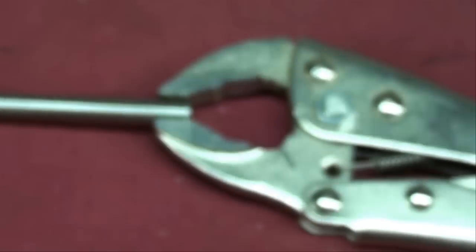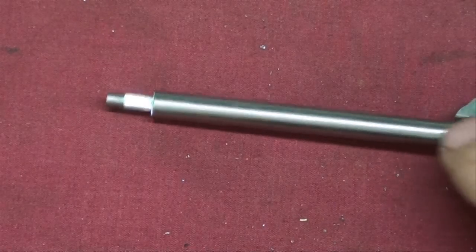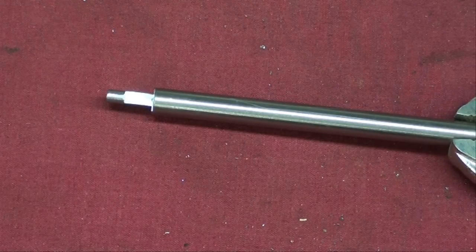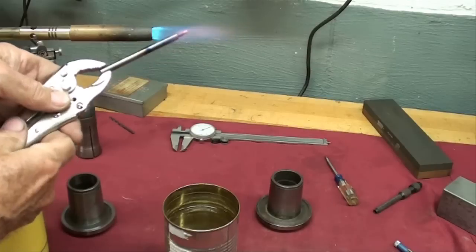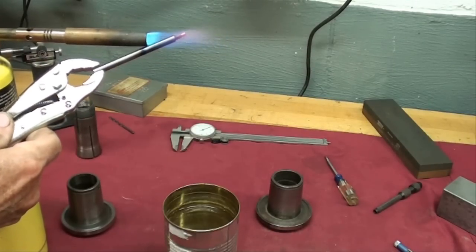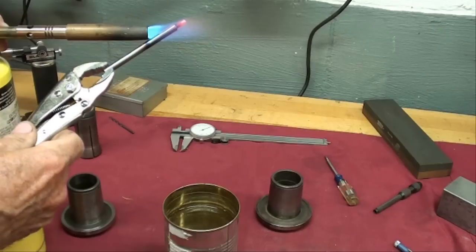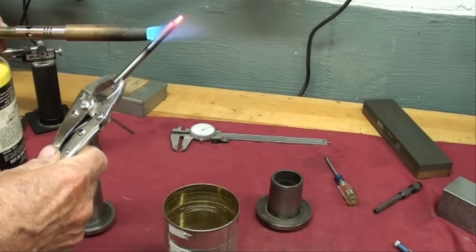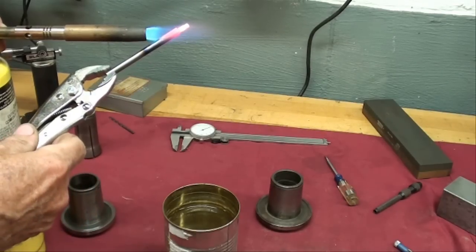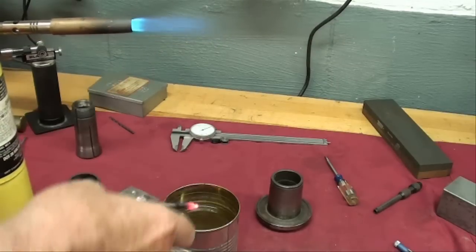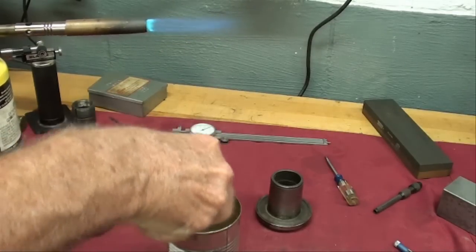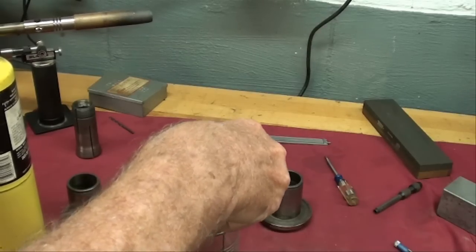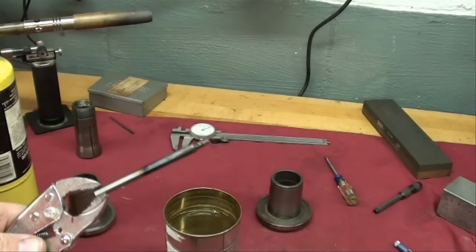Now I've got that in a vise grips. I'm going to heat this water hardening tool steel up red hot with my MAP torch and quench it in a can of water I have here on the bench. I heated that to the critical temperature, which is right around 1500 degrees. Now it will be quite hard.